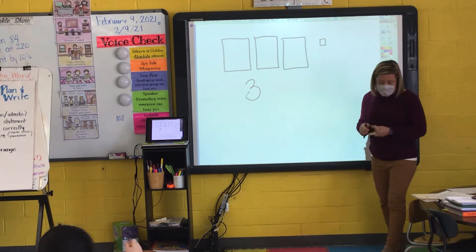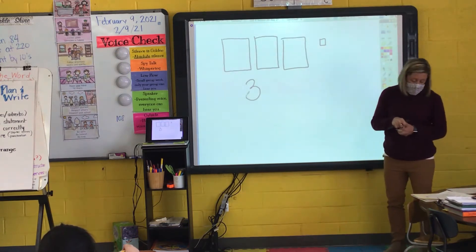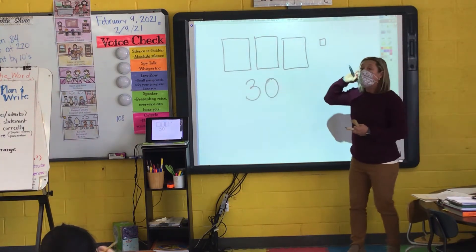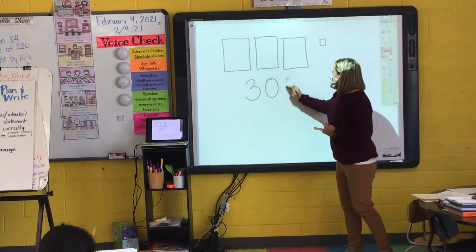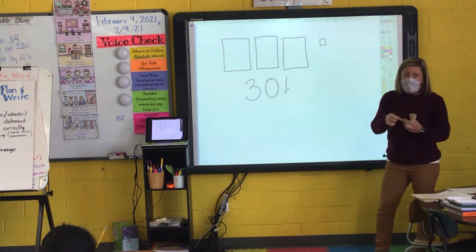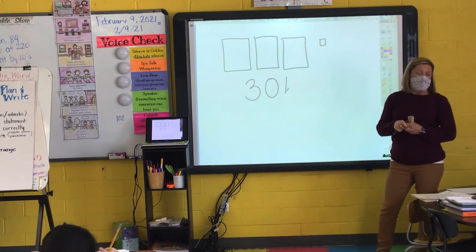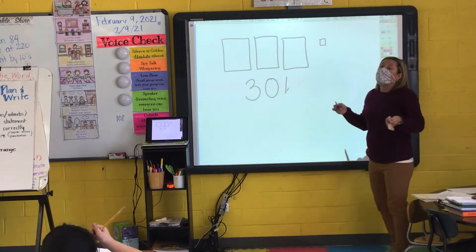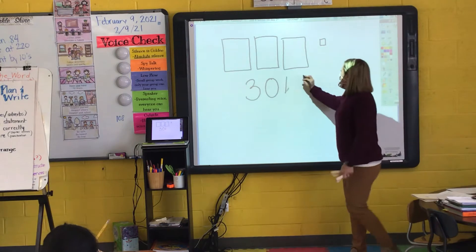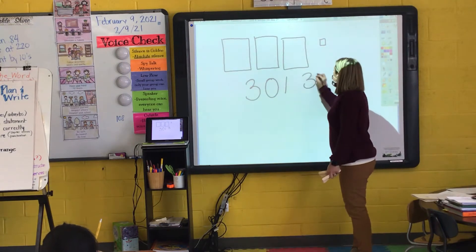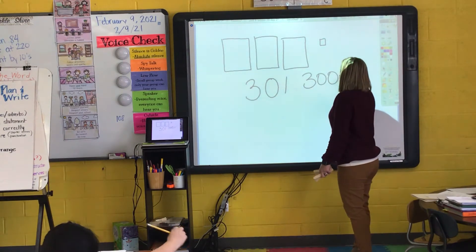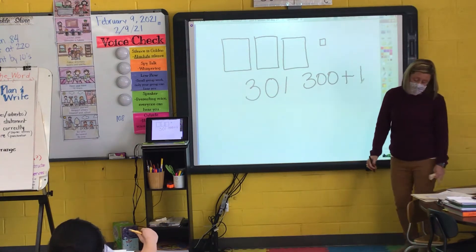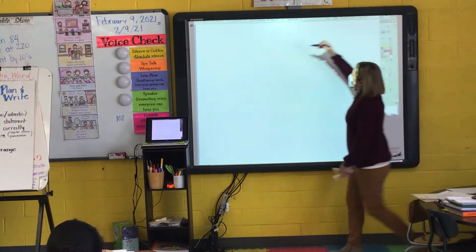Mario, how many ten sticks? Louie? And Melina, how many unit cubes? One. What is my number? Leo? 301. So when I write that in expanded form, I write 300 plus 1, because I have no tens.